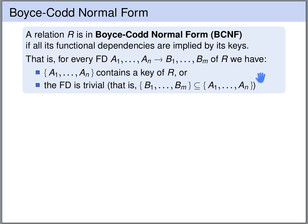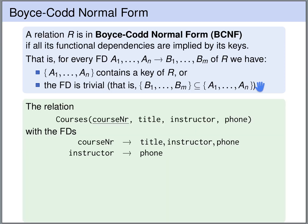So these are the two conditions that we have to check: the left-hand side contains a key, or the functional dependency is trivial. Let's have a look at an example. Here we have again our courses table, with course number, title, instructor, and phone number of the instructor.